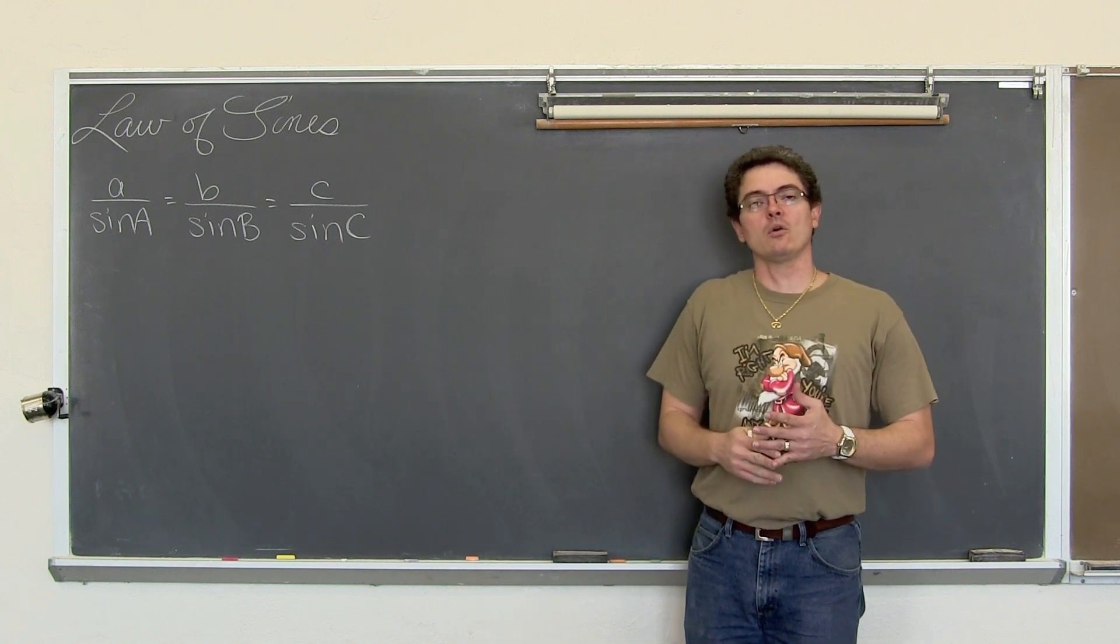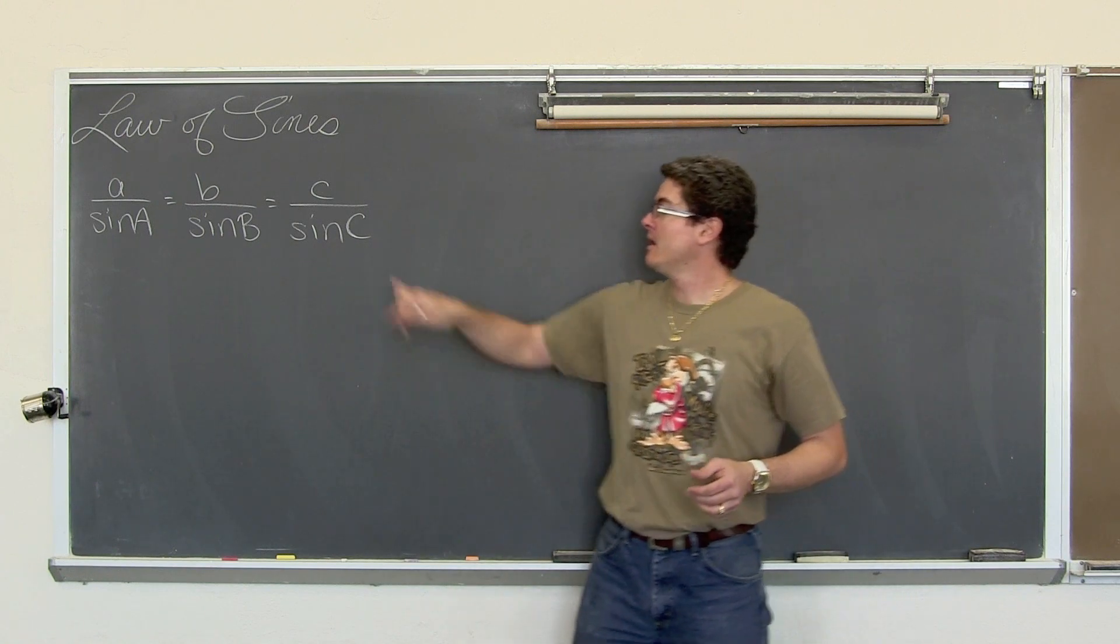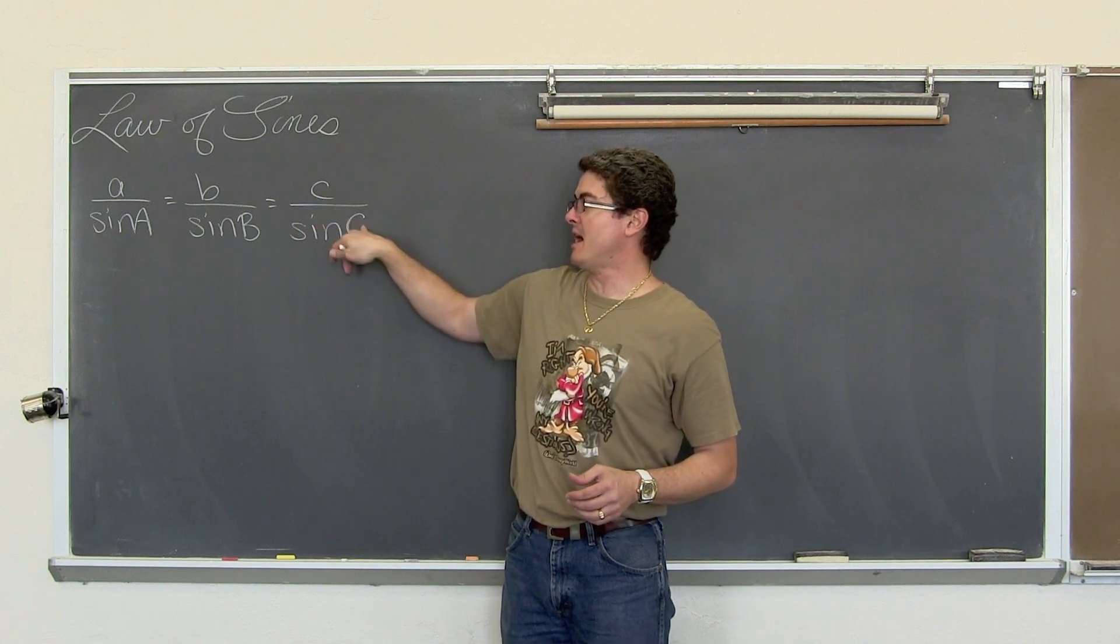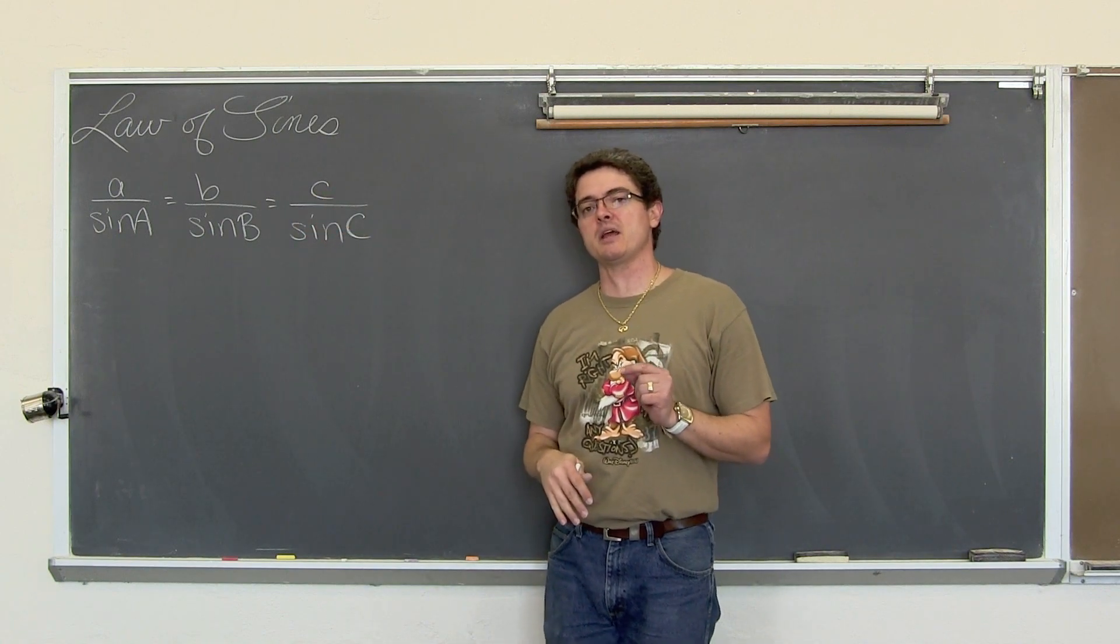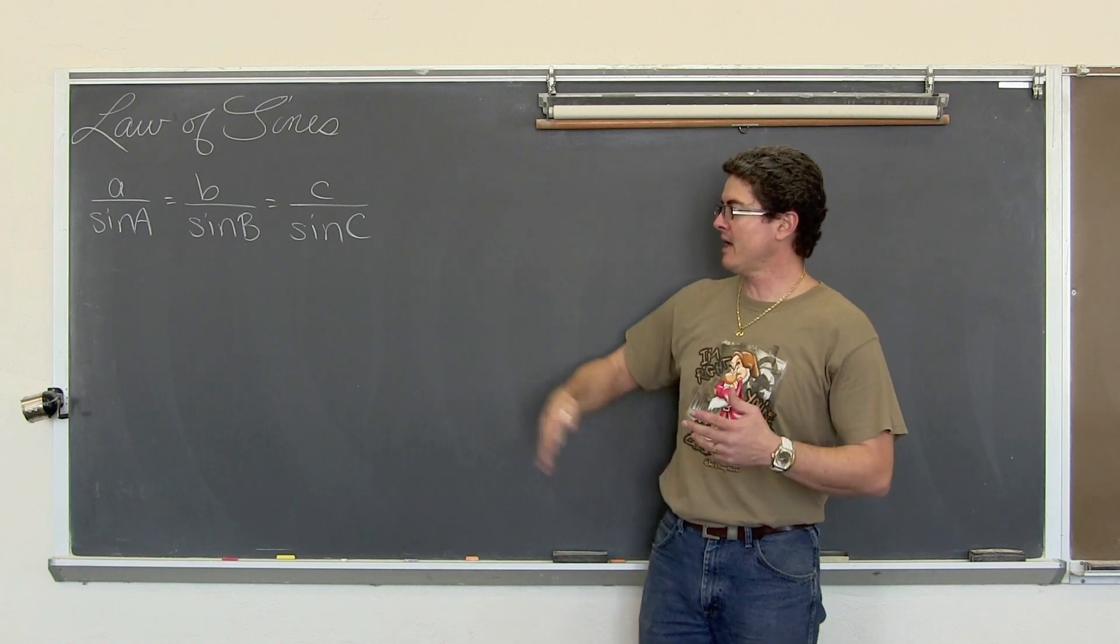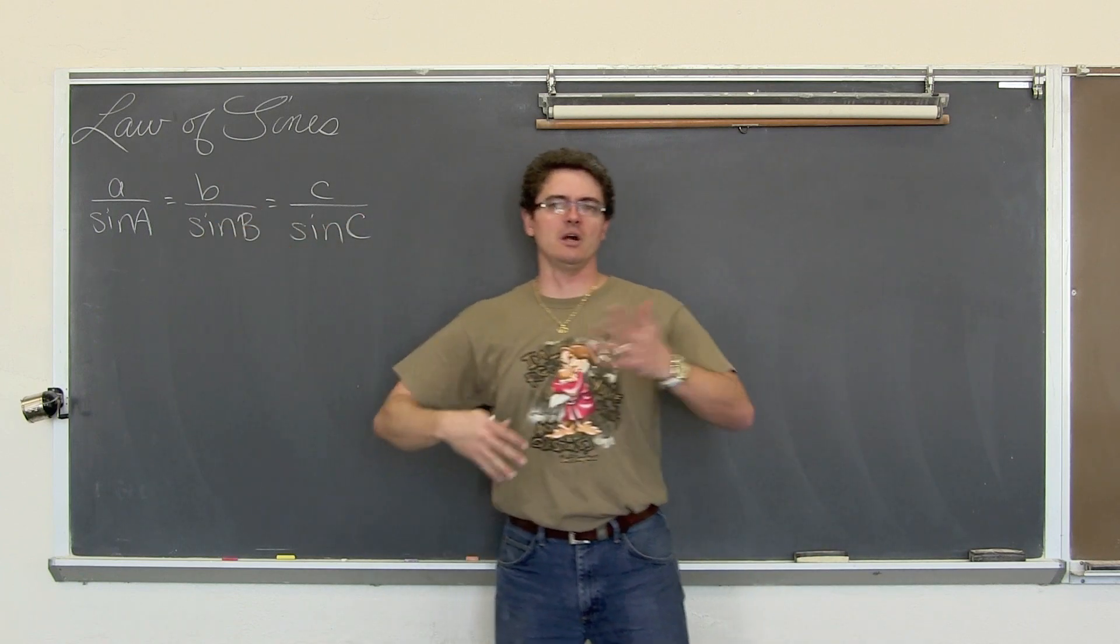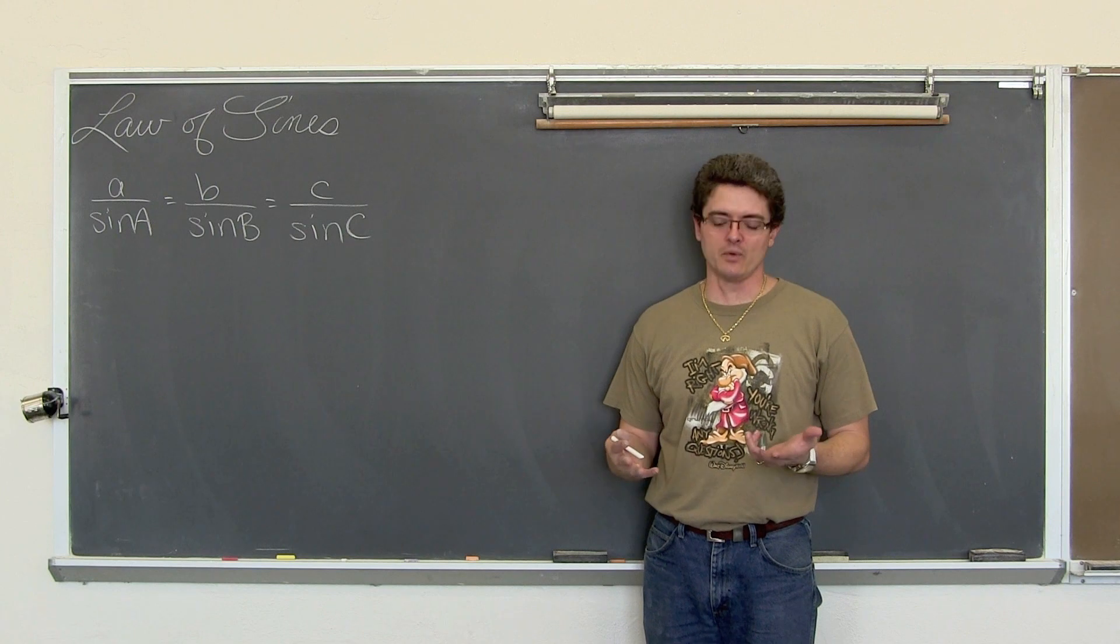You can't have an equation with two equal signs in it at the same time. So we are only going to use two of these at a time. We need to know an angle and its opposing side. We need at least that set up as enough information to start the problem.